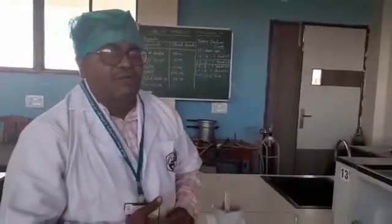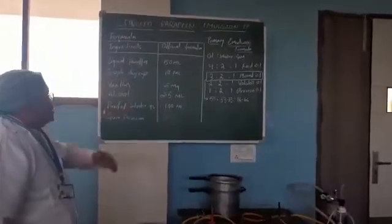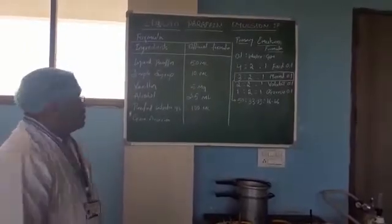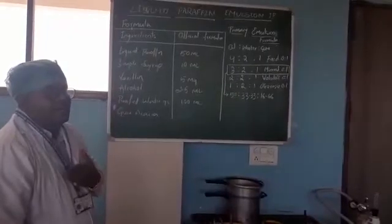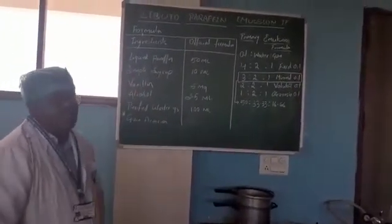Let us see what the official formula for liquid paraffin emulsion is. You can see in this board the official formula which contains liquid paraffin, almost 50% of the total formula, as the main ingredient in the formulation, followed by simple syrup as a sweetener.